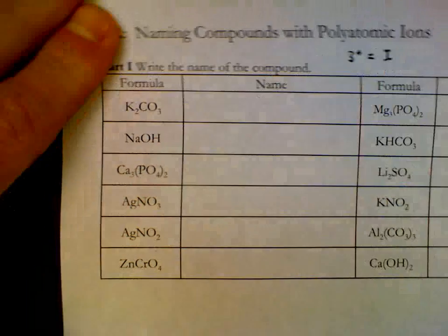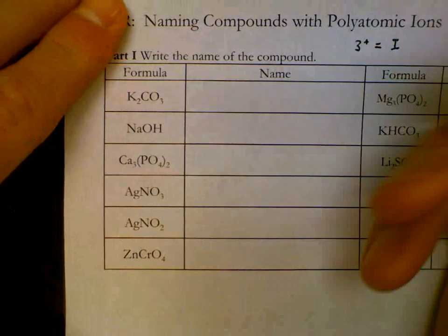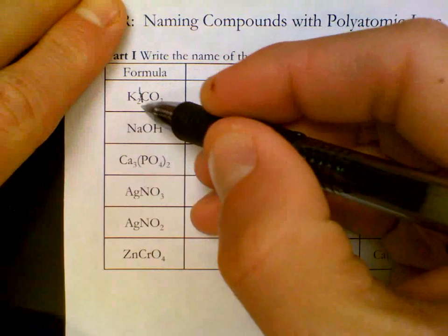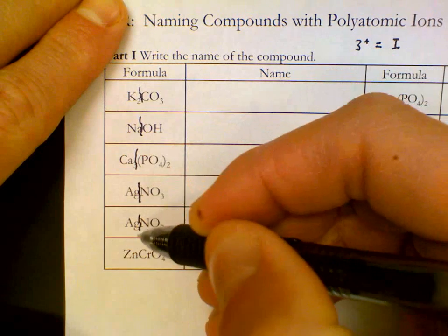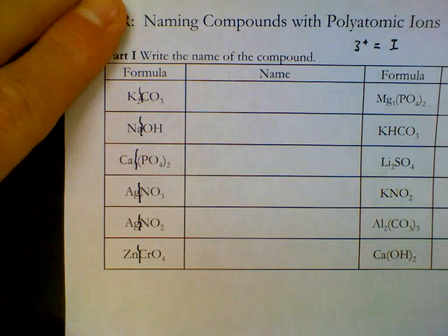For our class, we're going to be able to split the formulas after the first symbol. The first symbol is always going to be a metal. The second portion of the formula will be our anion.